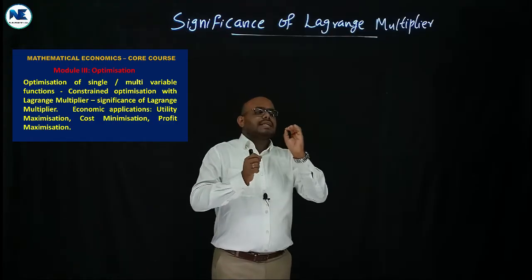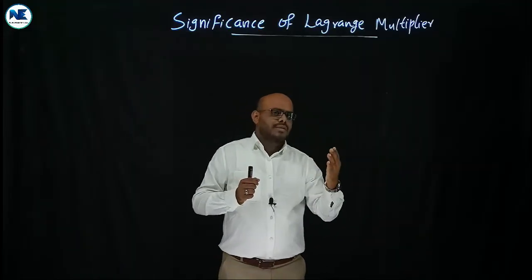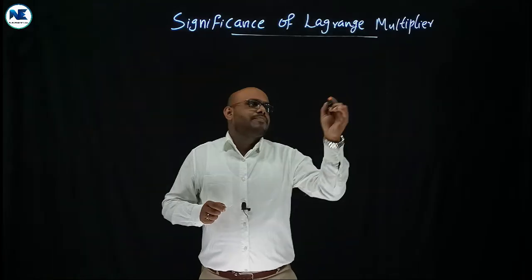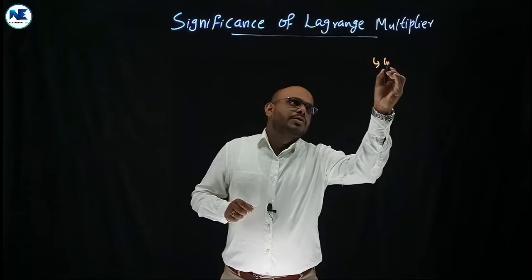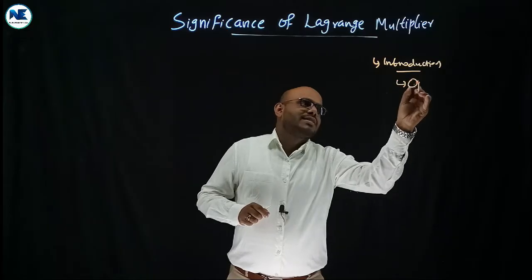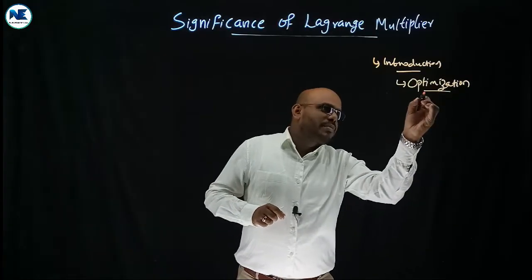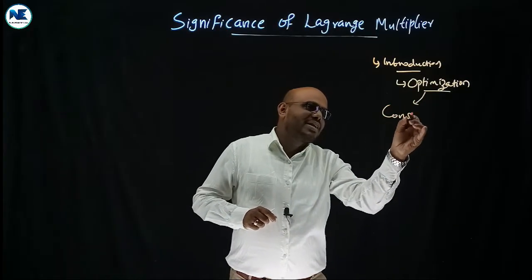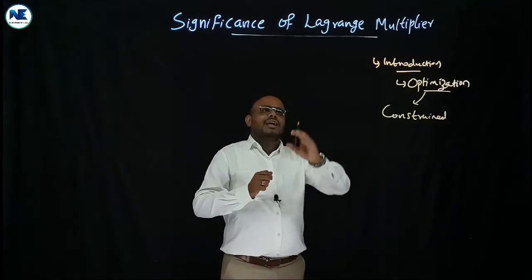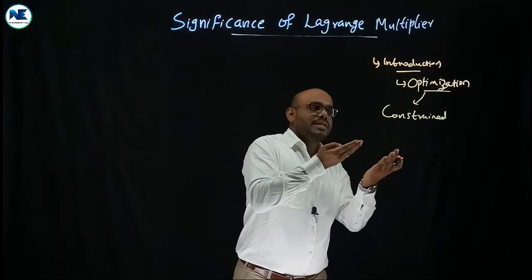We can simply say that the Lagrange multiplier is an integral part of constrained optimization — either maxima or minima. For the significance of Lagrange multiplier question, give a beautiful introduction about optimization, either maximization or minimization. The significance is that we can use the technique of Lagrange multiplier in the case of constrained optimization.